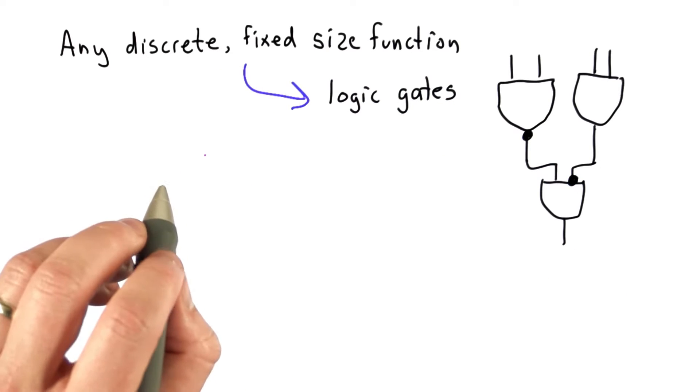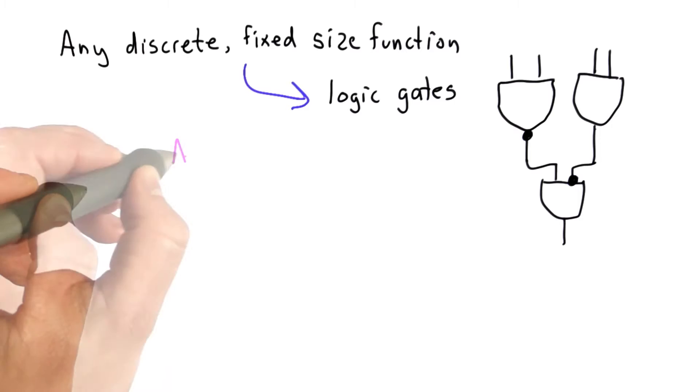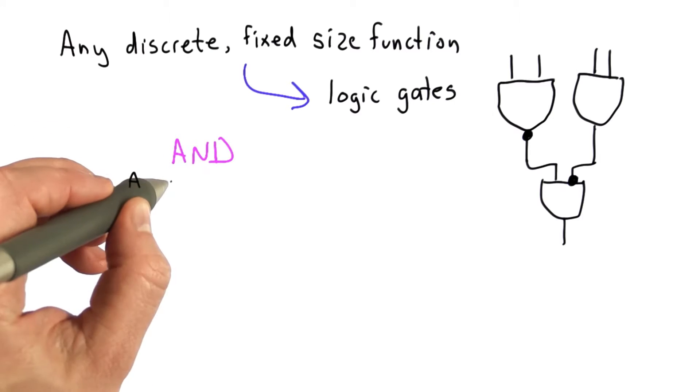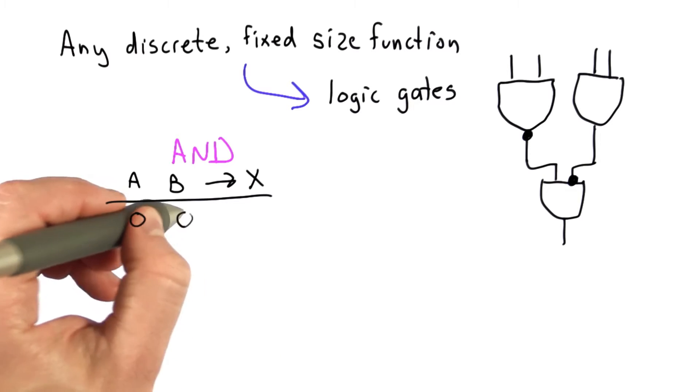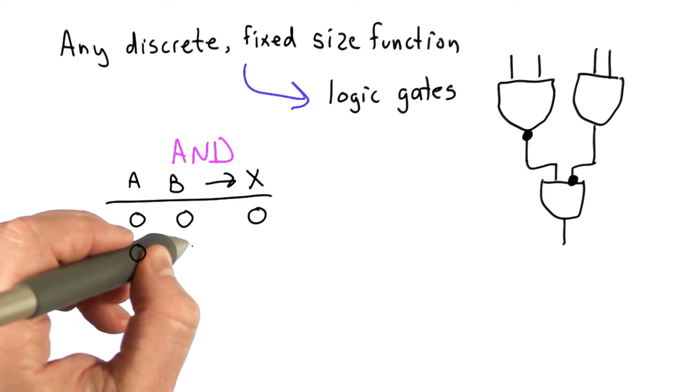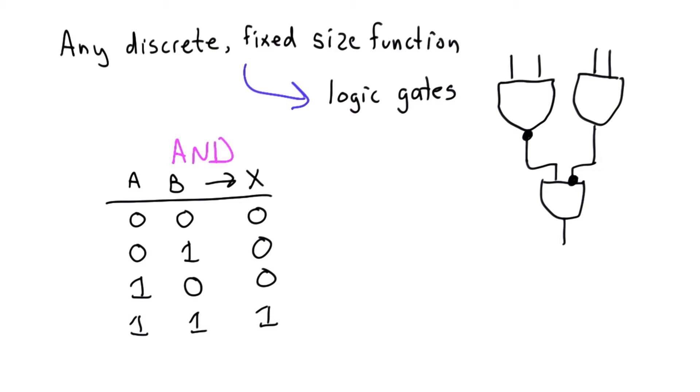We can think of a logic gate as a truth table. Let's take, for example, the function AND. AND takes two inputs and produces one output, and we can describe that AND with a table of values. We'll use 0 to represent false and 1 to represent true. So this is a regular AND gate.